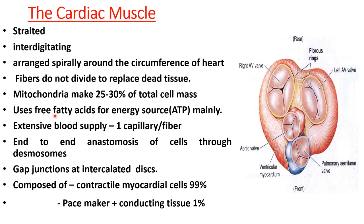Cardiac muscle fibers use free fatty acids for energy mainly. The source of energy is ATP, made from glycolysis, glucose breakdown, and breakdown of fatty acid chains. So free fatty acids are used mainly by the heart for energy, and the rest of the energy can come from glucose breakdown.